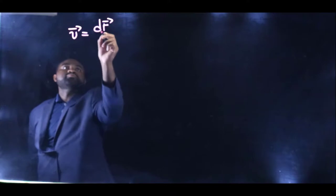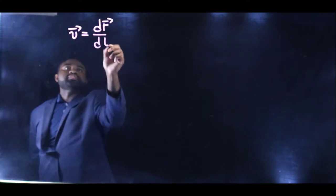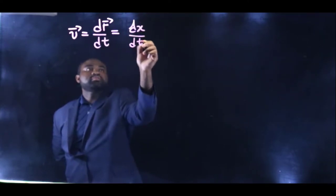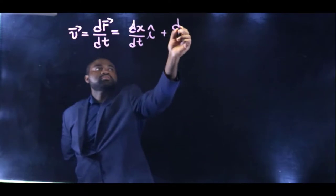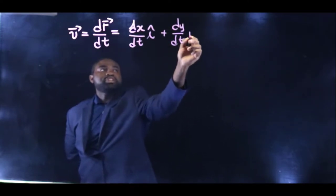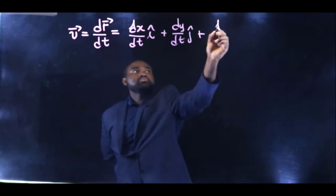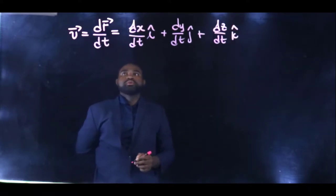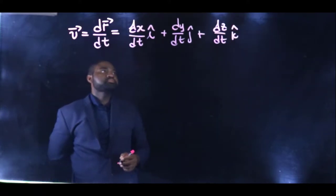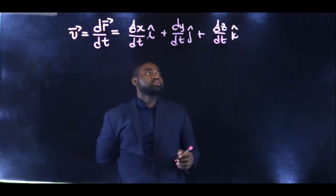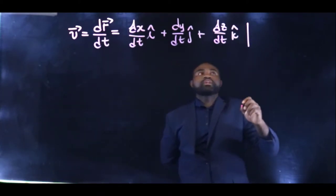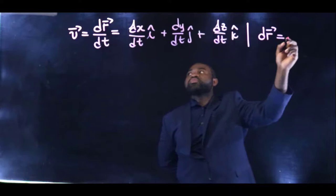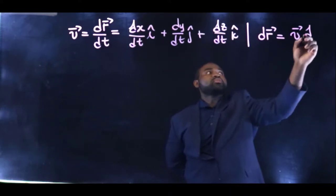Velocity is simply defined as dr divided by dt, which is gonna be equal to dx over dt i plus dy over dt j plus dz over dt k. What this means is the fact that dr therefore can be rewritten as v dt.